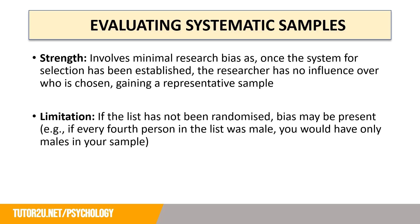How might we evaluate systematic sampling? A strength is that it involves minimal researcher bias, as once the system for selection has been established the researcher has no influence over who is chosen, gaining a representative sample. However, if the list has not been randomised, bias might still be present. For example, if every fourth person in the list was a male, you might end up with only males in your sample.